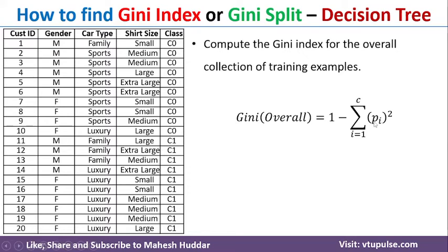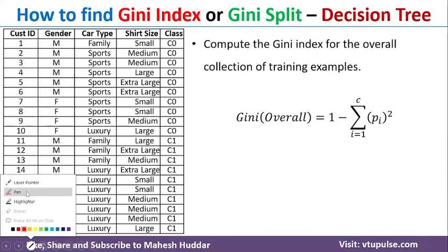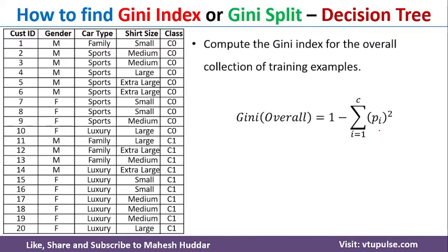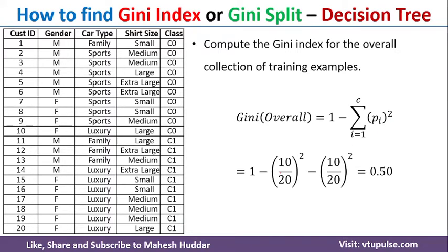Pi is the probability of the i-th class. In this case, we have two classes, C0 and C1. The probability of C0 is 10 out of 20, since there are 10 C0 examples out of 20. Similarly, probability of C1 is also 10 out of 20. Putting those values into the equation, we get a Gini of 0.5 for the overall dataset.